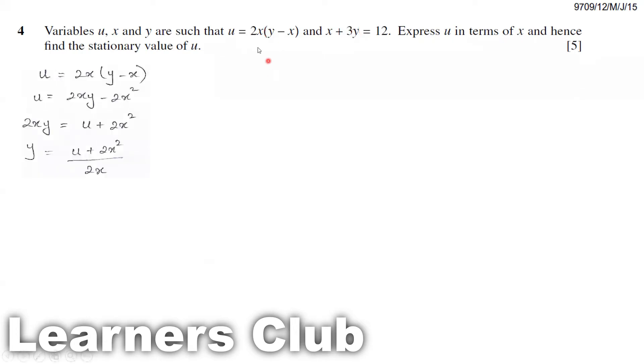First thing I'm taking this equation, u equals 2x(y minus x). I'm going to make y as the subject. What I'm doing is I'm opening the brackets. So 2yx minus 2x into x gives me 2x squared. Then I want to make y as the subject, so I make this term as the subject, which is 2xy. I take this term to the other side, so I get (u plus 2x squared) divided by 2x.